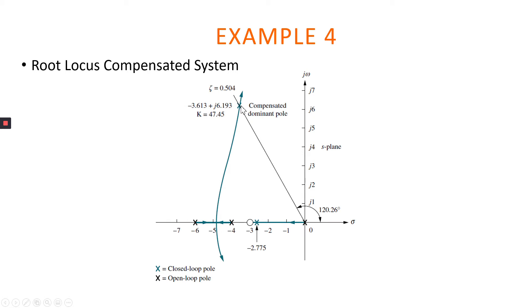So our root locus looks like this, connecting between radial damping ratio line 0.504 with the compensated dominant pole.